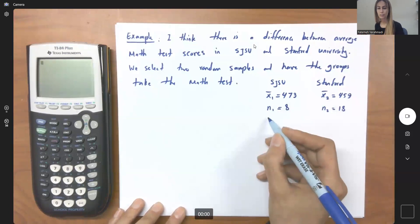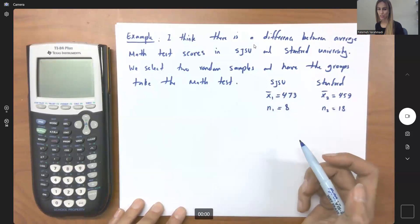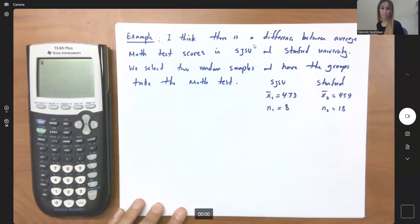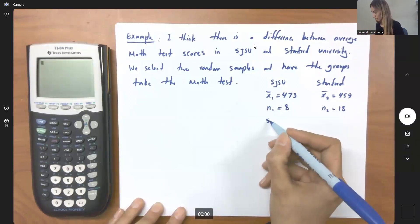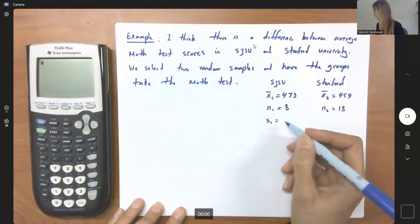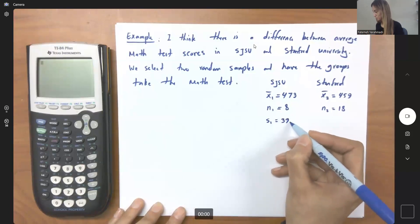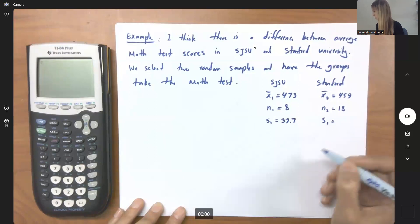I calculated the standard deviation. I don't have information about the standard deviation of populations here. This is just a new test. This is what I designed. S1 is equal to 39.7 and S2 is equal to 24.5.